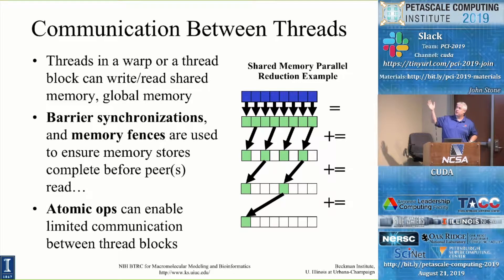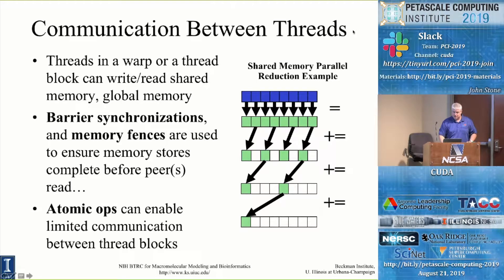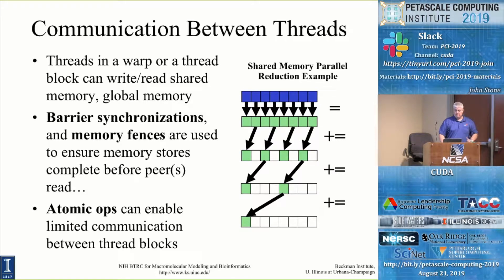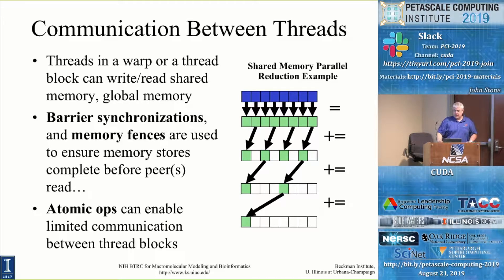Communication between threads in the same block: one example of what we can do with shared memory is reductions. Every thread in a thread block writes a value to shared memory — their contribution to some reduction operation — and then we use a recursive doubling algorithm to do a parallel reduction in a logarithmic number of steps, getting the reduced value in one element at the end. This is done using a series of barrier synchronizations and memory fences to ensure changes to shared memory are visible to other threads in the same block. We can also use atomic memory operations to global memory as a way of communicating between thread blocks.